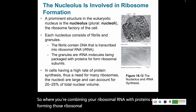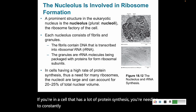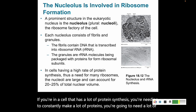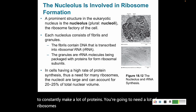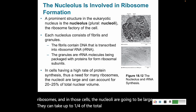If you're in a cell that has a lot of protein synthesis — needing to constantly make a lot of proteins — you're going to need a lot of ribosomes. In those cells, the nucleoli are going to be large. They can take up to a quarter of the total volume of your nucleus, just dedicated to making ribosomal RNA.